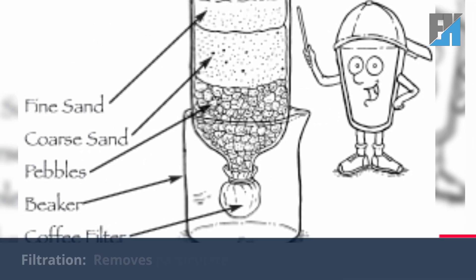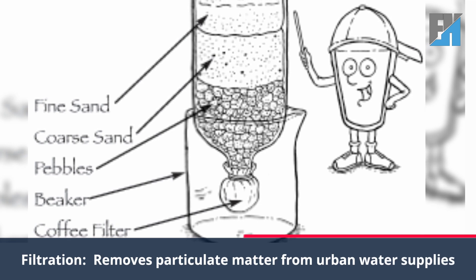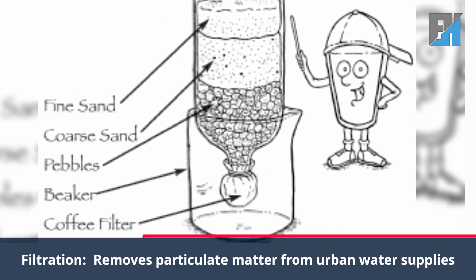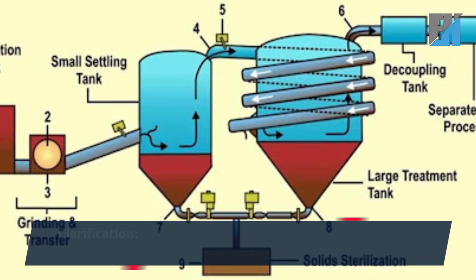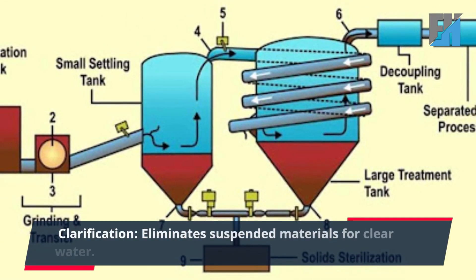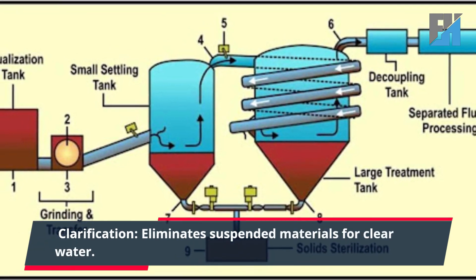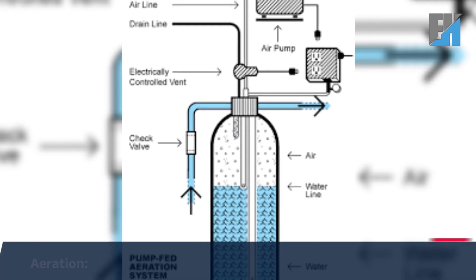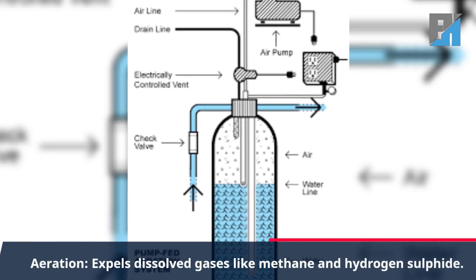Firstly, filtration removes particulate matter from urban water supplies. Secondly, clarification eliminates suspended materials to produce clear water. Thirdly, aeration expels dissolved gases such as methane and hydrogen sulfide.